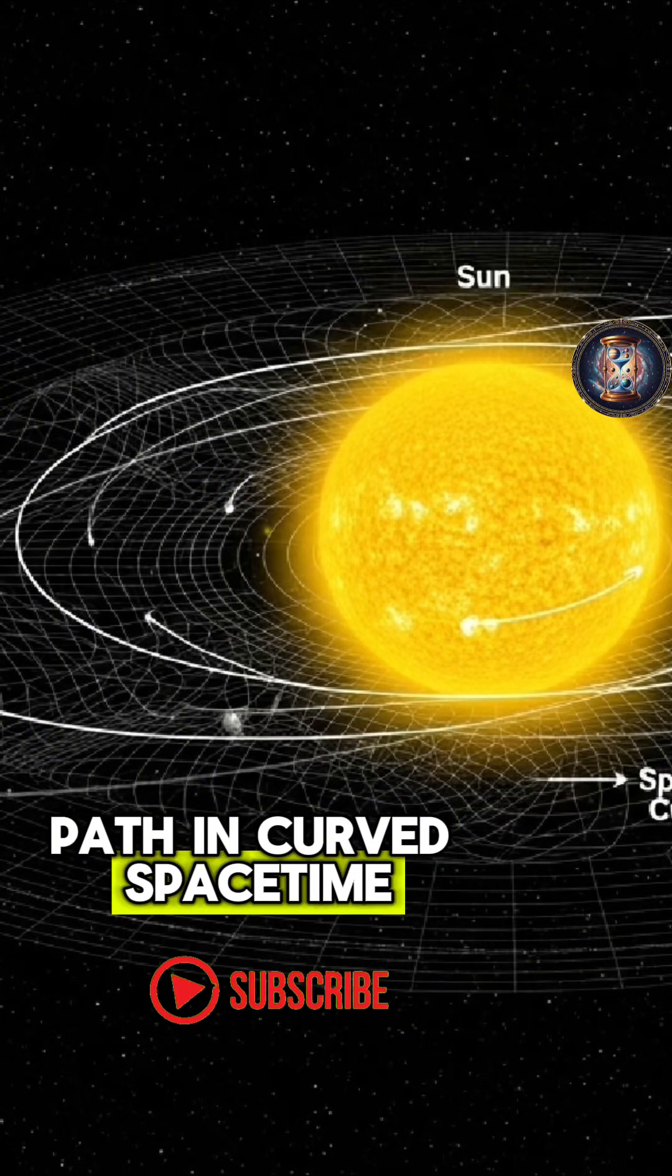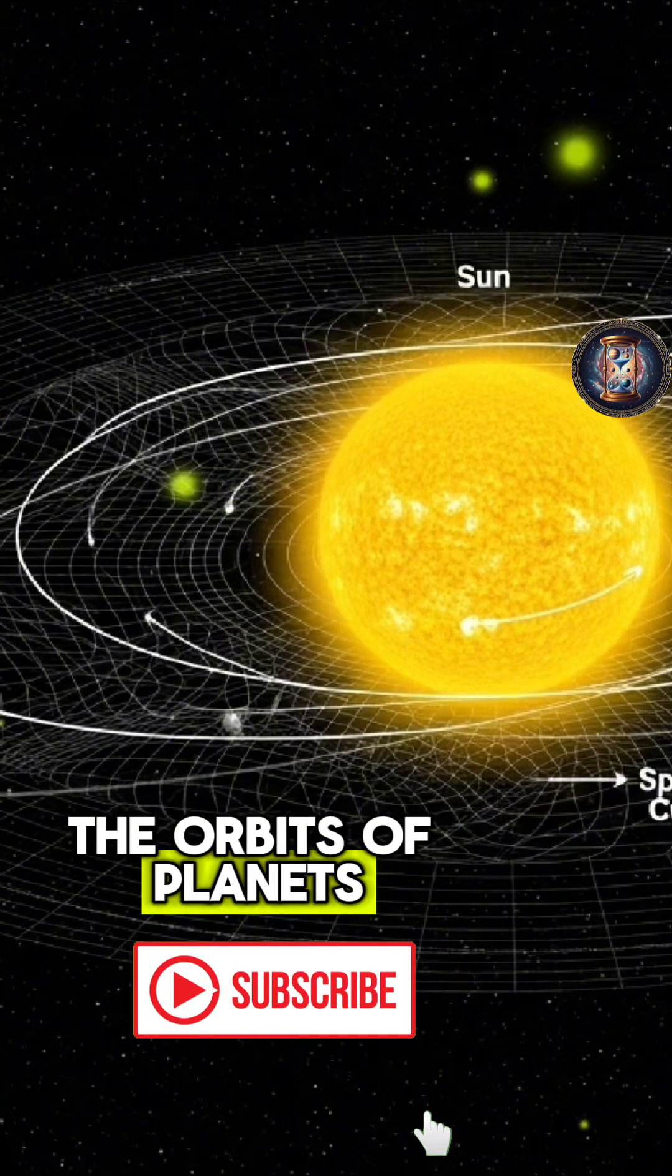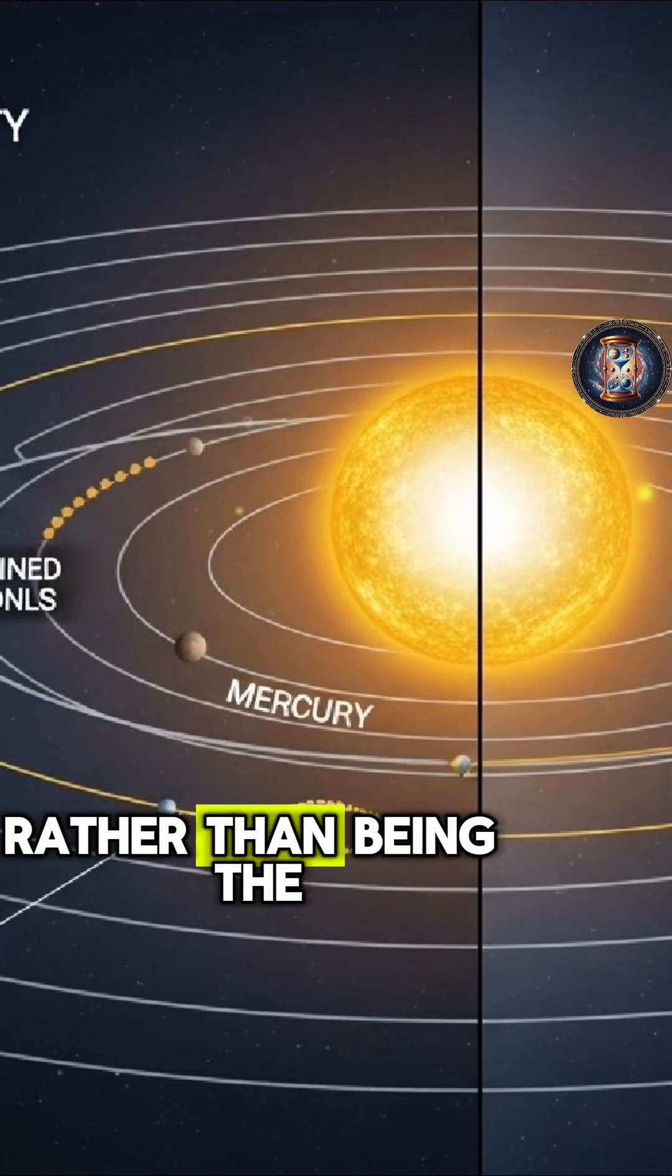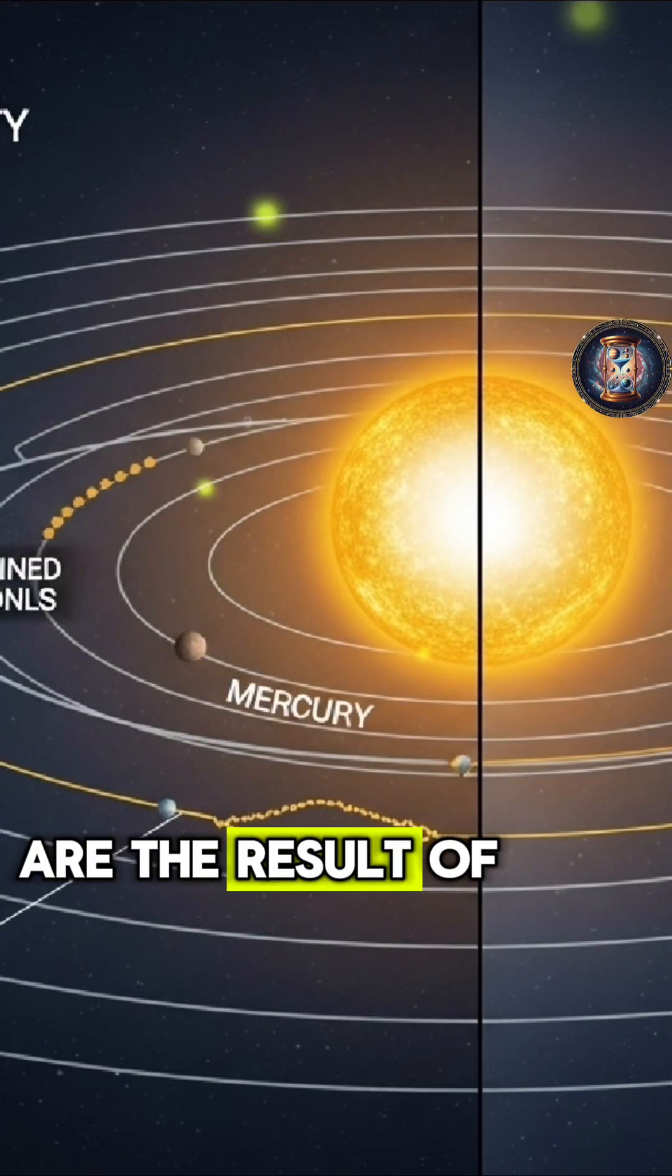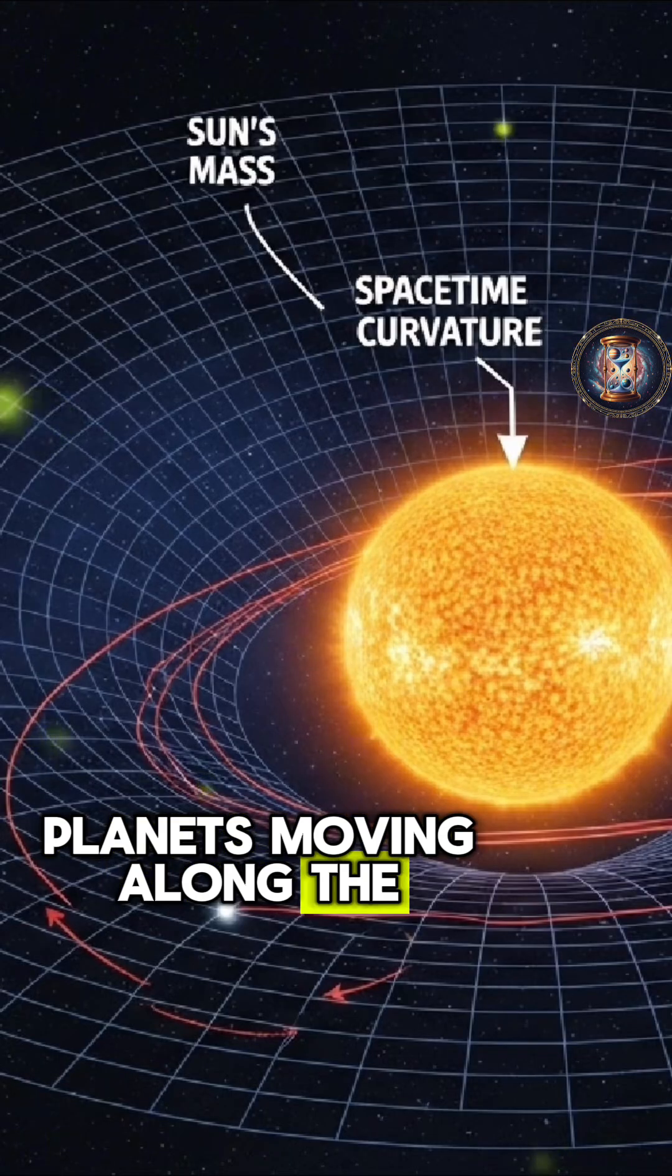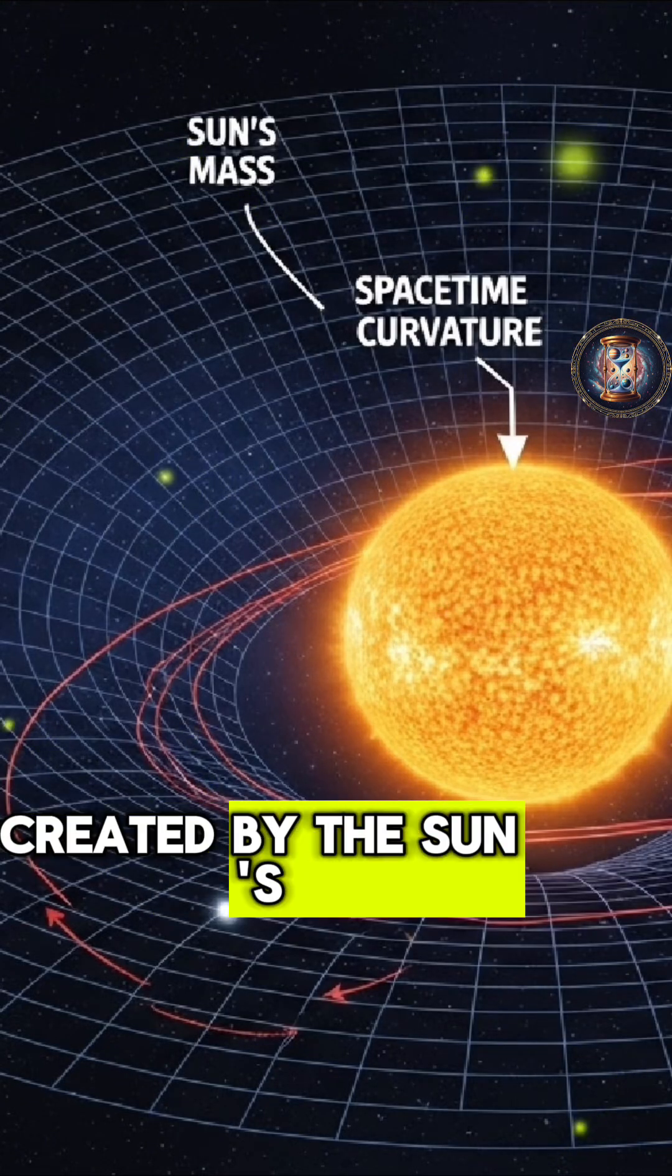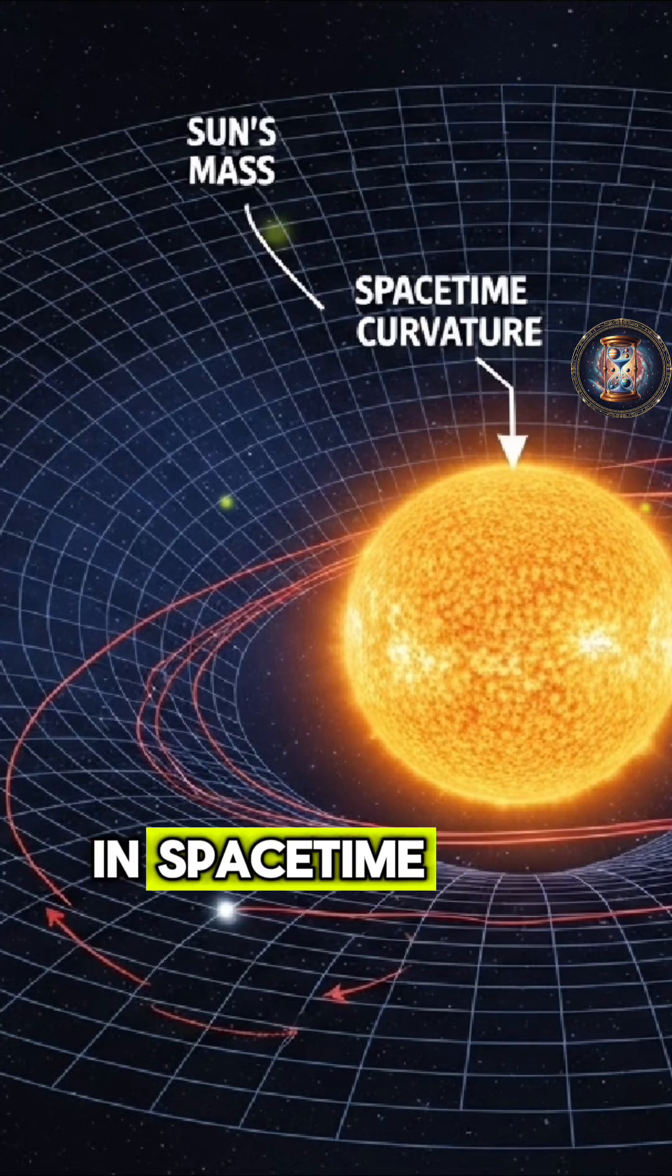Path in curved spacetime. The orbits of planets around the Sun, rather than being the result of a mysterious pulling force, are the result of planets moving along the most natural curves created by the Sun's immense mass in spacetime.